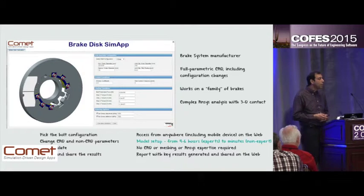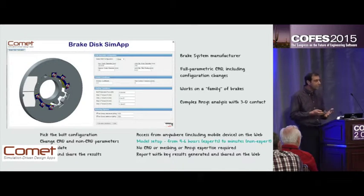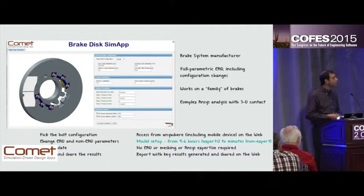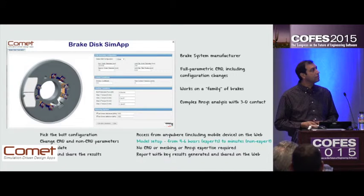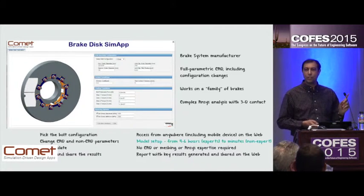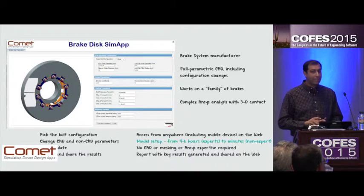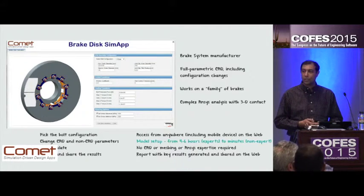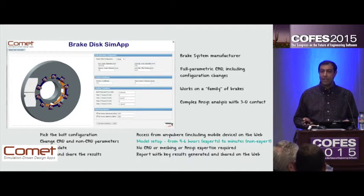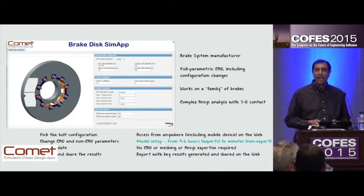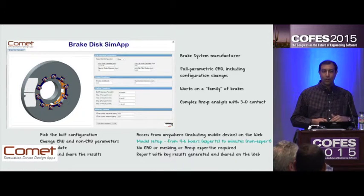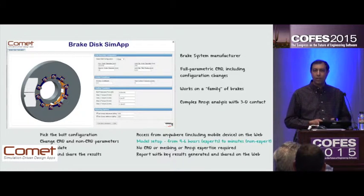Here's another example being used by a brake manufacturing company. Again, fully parameterized CAD, but in this case it gets more interesting — you can make configuration changes, going from a six-bolt configuration to any number you want. That looks like an innocent change, but it means you now have to deal with changing contact conditions — something that took the ANSYS expert four to six hours to set up. It's now minutes. And it doesn't matter whether the CAD is NX, CATIA, or Pro/E — the template works, because the engineering and simulation does not care what the CAD is.